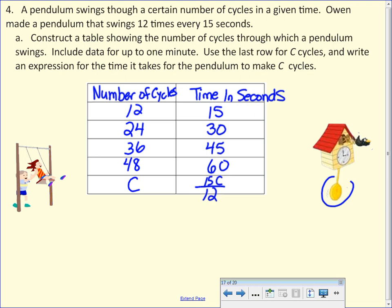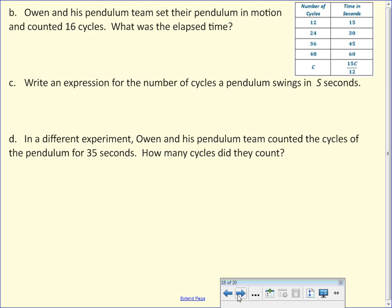I told you this one was a challenge. So if this one's a little confusing, that's okay. We were just trying to take it to the next level for some of you who are ready for that. So it's 15 seconds per cycle. 15 seconds per cycle. What's a cycle? 12, 12 swings. So that way you could figure out how many swings per second. Alright? So that one was just a little bit challenging. So all of them in the pendulum teams set up their pendulum motion and counted 16 cycles. What was the elapsed time? So what you would have to do, if this was our formula, 15 times C divided by 12. 15 C equals 16. So 15 times 16 divided by 12. Your answer would be 20 seconds. Don't worry, this one confuses you. It was meant to be a challenge.